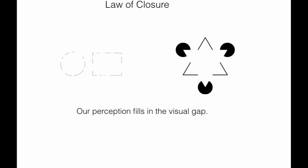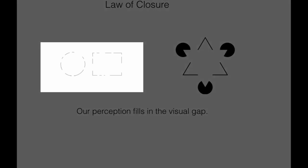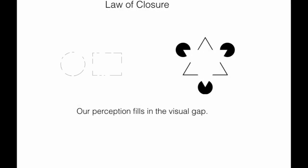But in reality, we have only three arcs and three circles. In the picture on the left hand side also, you can see that there are no circle and rectangle drawn actually, but we perceive that there is a circle and then there is a rectangle.